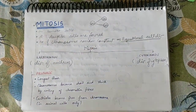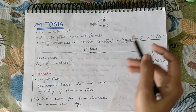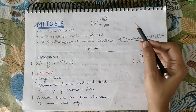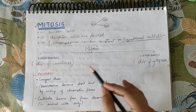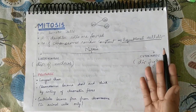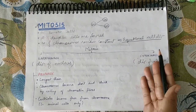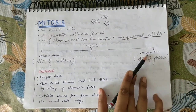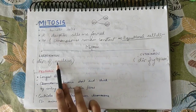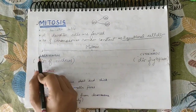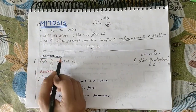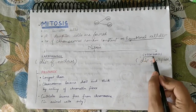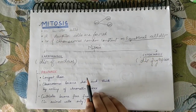Mitosis cell division has two parts: first the nucleus divides, then the cytoplasm divides. Division of the nucleus is known as karyokinesis, and division of the cytoplasm is known as cytokinesis.